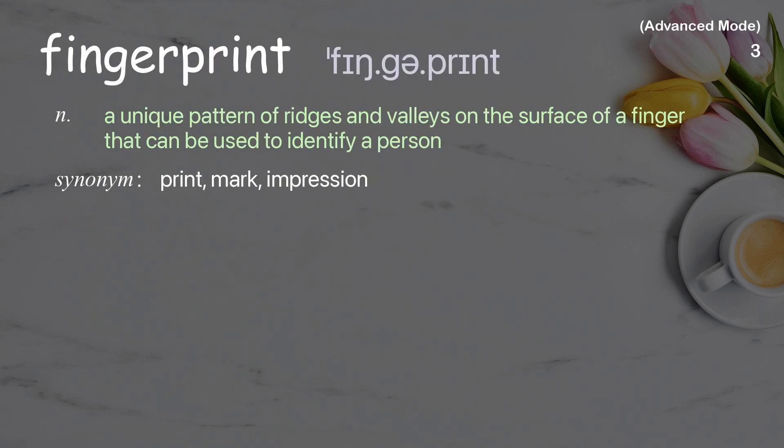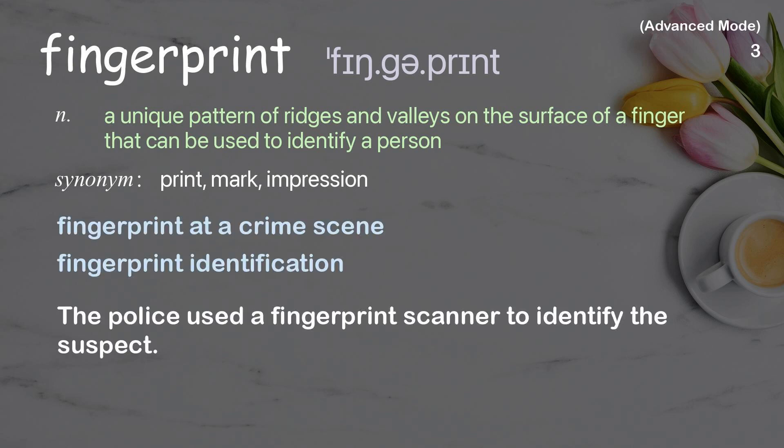Fingerprint: a unique pattern of ridges and valleys on the surface of a finger that can be used to identify a person. Examples: Fingerprint at a crime scene, Fingerprint identification. The police used a fingerprint scanner to identify the suspect.